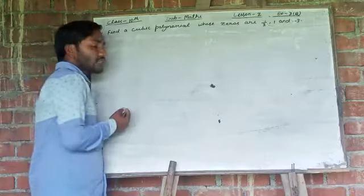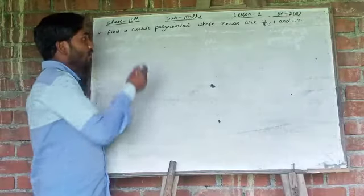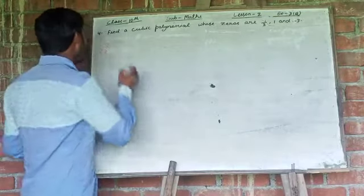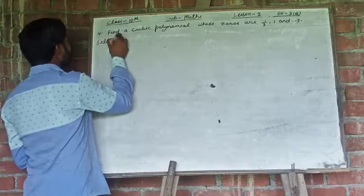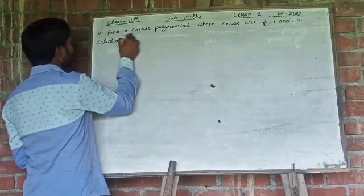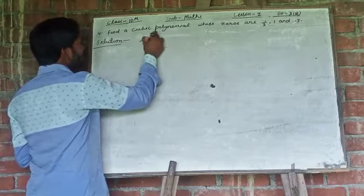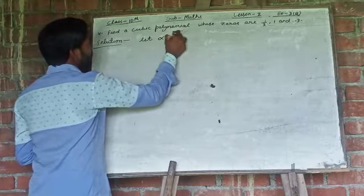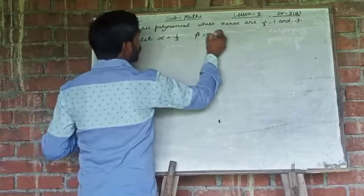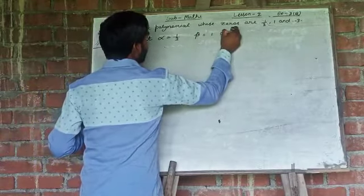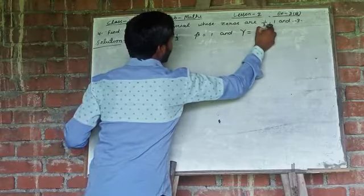Let us solve this question to find out the cubic polynomial given to you. Let alpha is equal to 1 by 2, beta is equal to 1 and gamma is equal to minus 3.